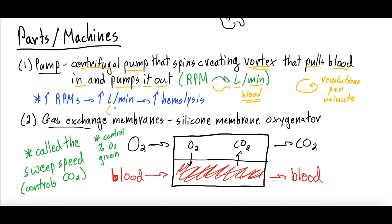On the other hand, if you decrease RPMs too low, leading to too-low blood flow, you get an increase in blood clotting because that blood becomes too stagnant in the ECMO circuit. So you want to titrate RPMs to the appropriate liters per minute: higher RPMs risk more hemolysis, and lower RPMs increase the risk of blood clotting in the ECMO circuit.